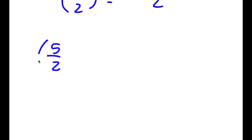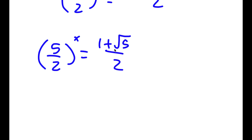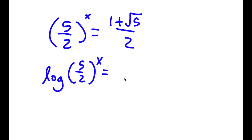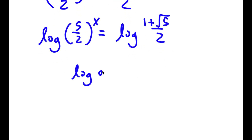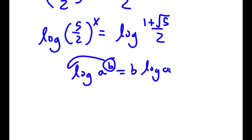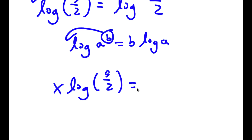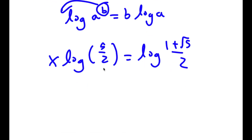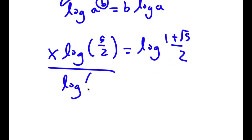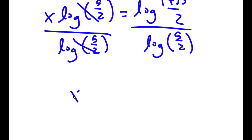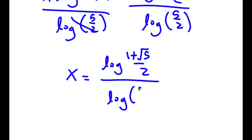So this gives me two equations. 5 over 2 to the power of x is equal to 1 plus the square root of 5, over 2. To solve this, I'm going to first start by taking the log on both sides. So now I have log of 5 over 2 to the power of x is equal to log of 1 plus the square root of 5, over 2. If I have something in the form log a to the power of b, I can move the exponent b to the front. So now I have x times log of 5 over 2 is equal to log of 1 plus the square root of 5, over 2. We want to isolate x, so I'm going to divide both sides by log 5 over 2. So these two cancel out, and now I have x is equal to log of 1 plus the square root of 5, over 2, divided by log of 5 over 2.